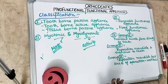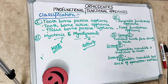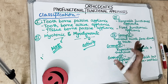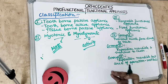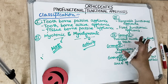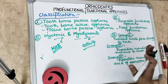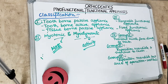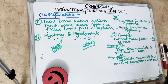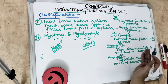Removable functional appliances are those myofunctional appliances which can be removed and inserted into the mouth by the patient. Fixed functional appliances are those which are fixed on the teeth by the dentist and cannot be removed by the patient.